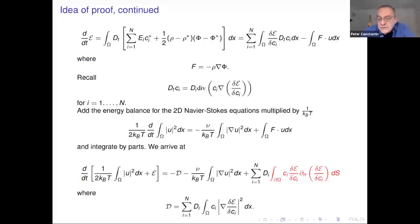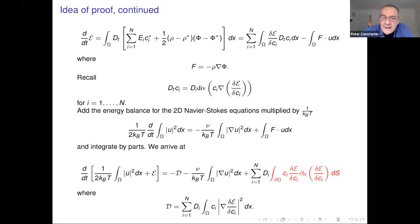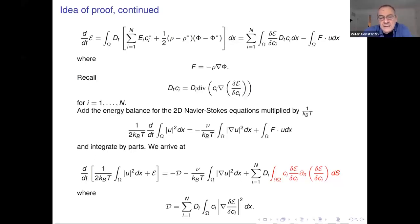That was all about 2D. The essential difference between 2D and 3D is what the energy buys you for the potential. In the 2D case, it gives you that ρ is in L log L, and since Δφ = ρ in L log L, in 2D this gives φ in L∞. Then you can pass to natural variables — exponential of φ times the C's — and do analysis. In 3D, L log L buys you almost nothing: it gives only three-halves regularity for φ, which is not good enough.